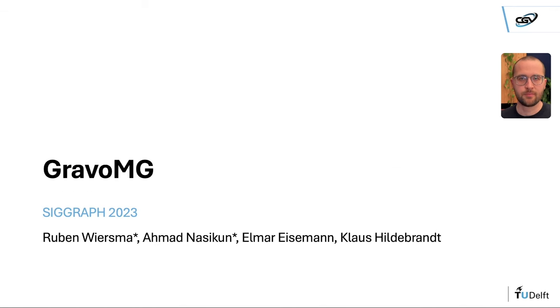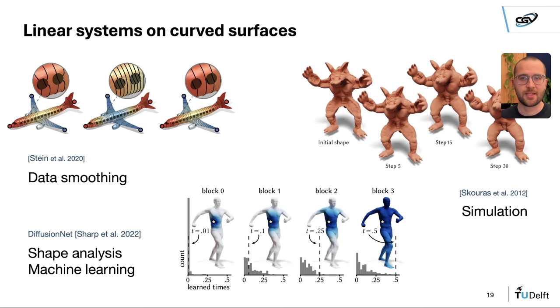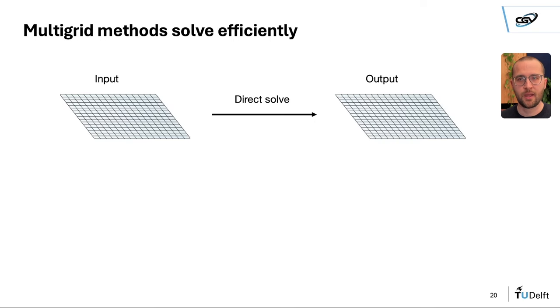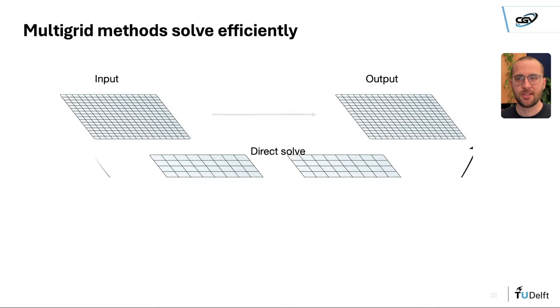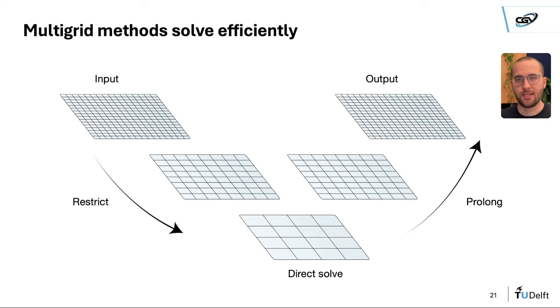Finally, Gravo multigrid. Here we look at solving linear systems, which is useful for many tasks in geometry processing. Multi-grid methods solve such linear systems efficiently by solving on multiple grids at different scales.